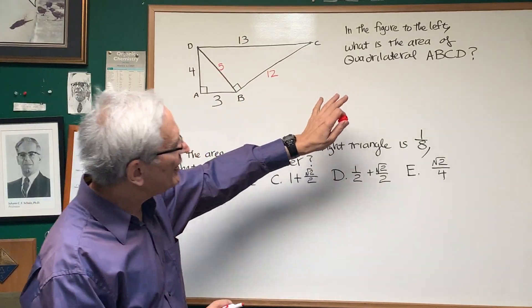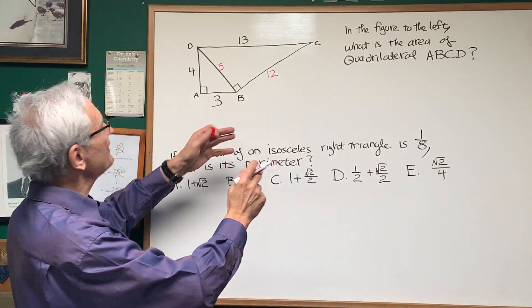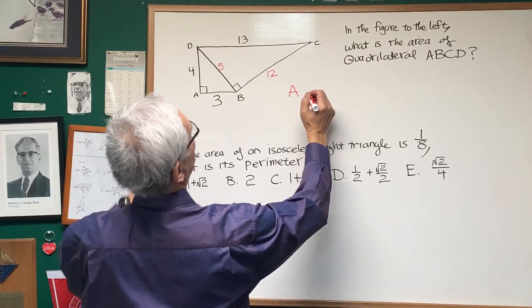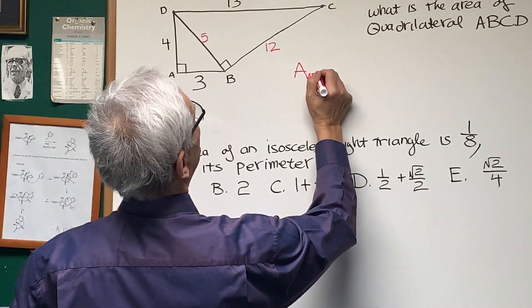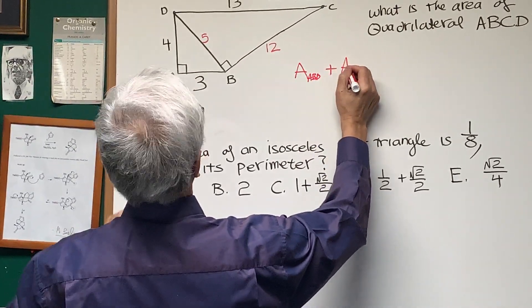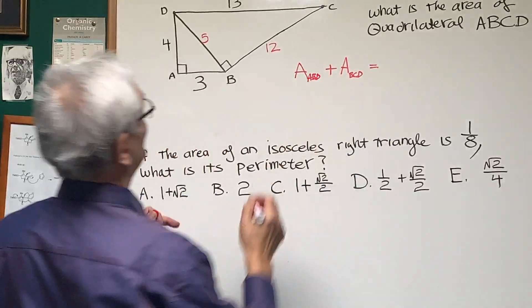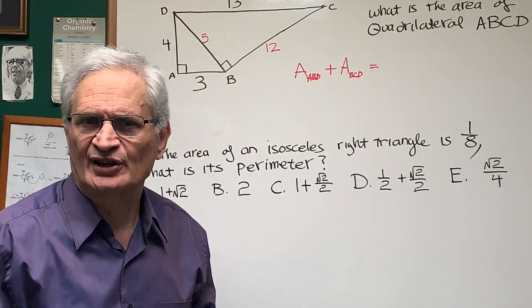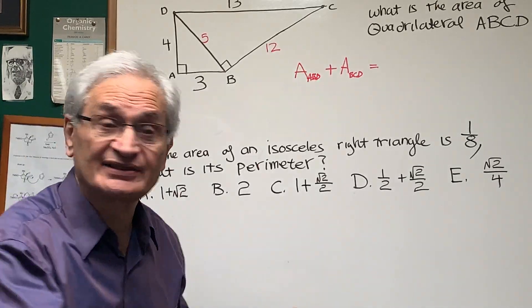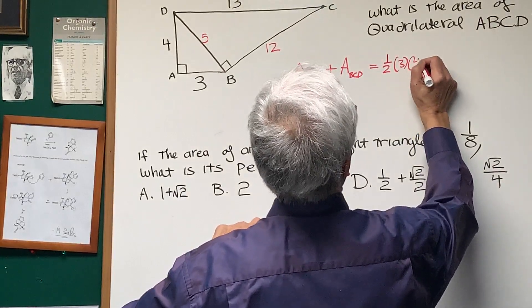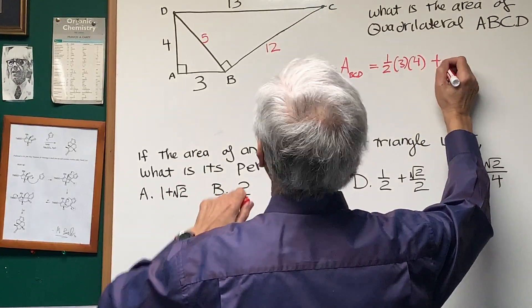What is the area of quadrilateral ABCD? Well, it's going to be the area of triangle ABD, which is the triangle on the left, plus the area of triangle BCD, and that's easy to calculate. What's the area of a triangle? One half the base times the height. So, we have, in this case, one half the base times the height. One half,